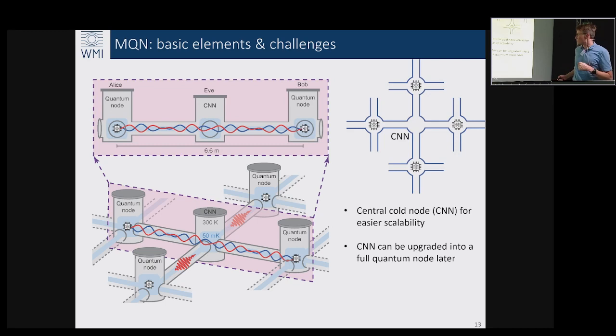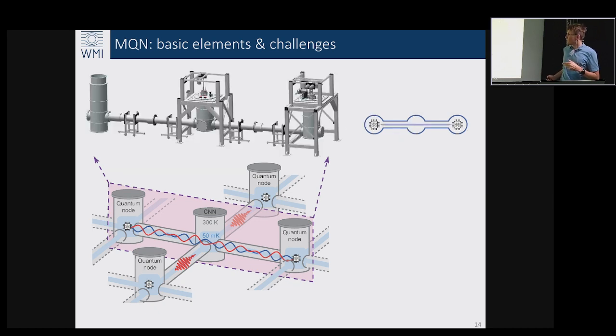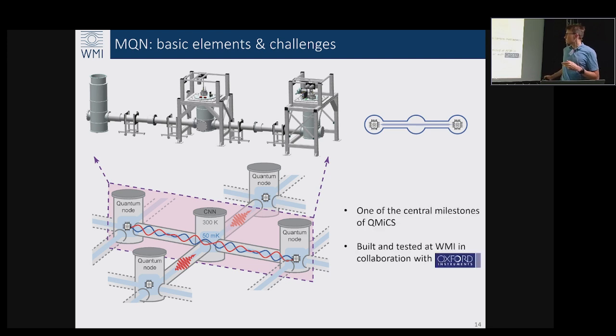Our idea, what we have been built at WMI, was the implementation of a basic element of such a network: a connection between two dilution fridges via central node, designed in collaboration with Oxford Instruments in such a way that it's relatively easy to scale it to four quantum nodes and beyond. That basically just means you buy more such fridges, more commercially available components - it's just a question of space and money and efforts of course.